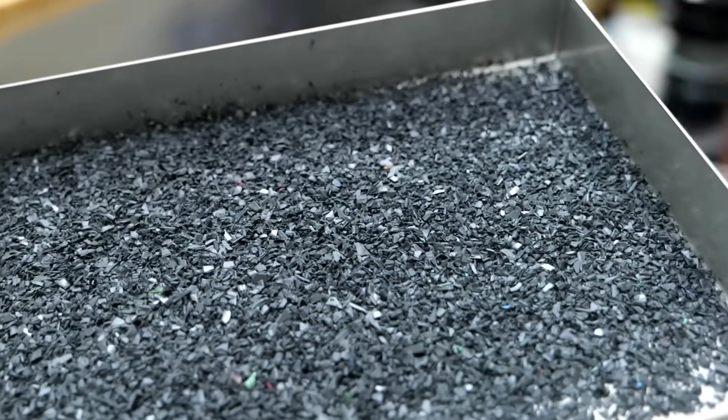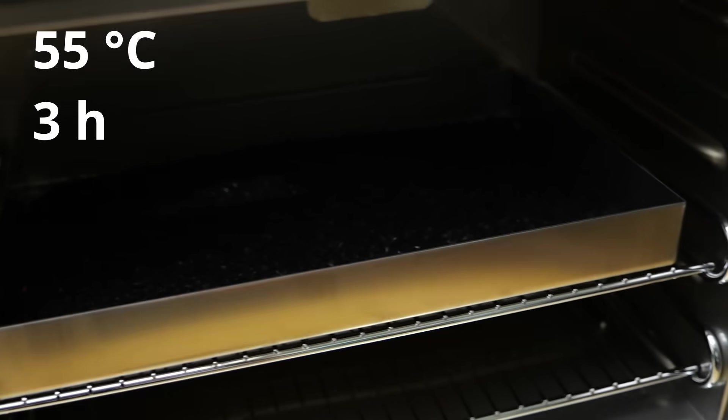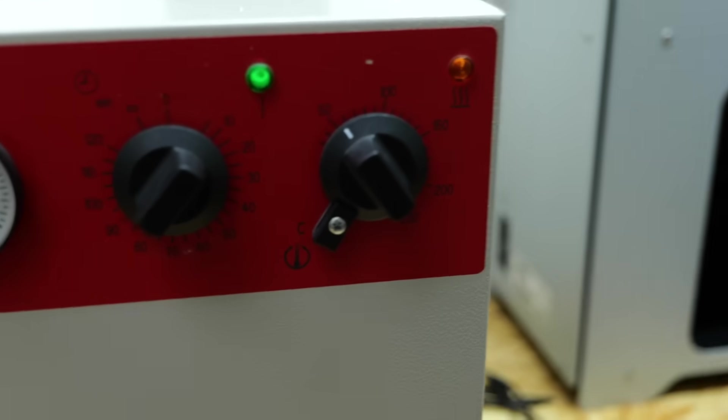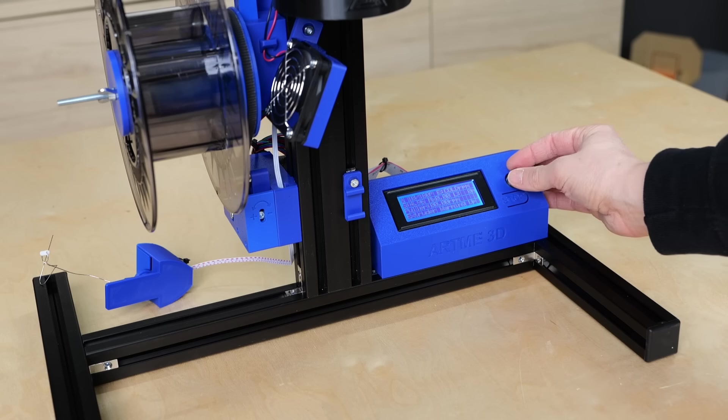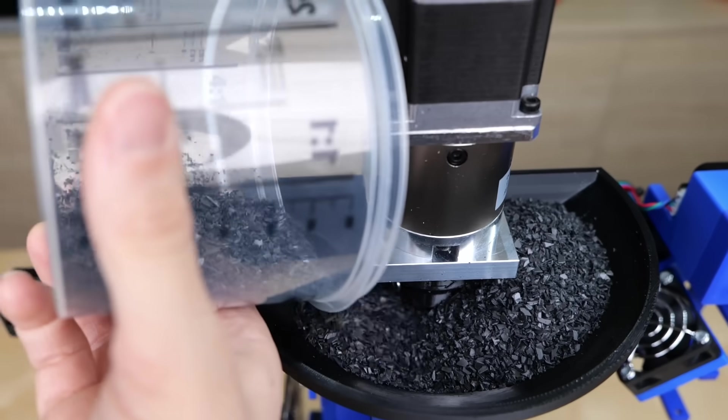If you want to extrude filament, the plastic needs to be dry, so I put all of the shreddings onto a tray and put them into my drying oven for some hours. After all of the remaining moisture had evaporated, I was ready to start the first extrusion test. I turned on the Artme 3D and preheated it to 175 degrees Celsius. I poured in the shredded material and started the extrusion process.